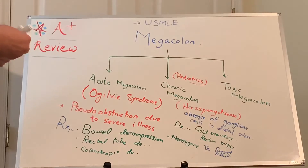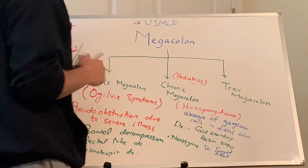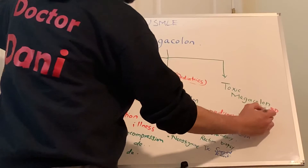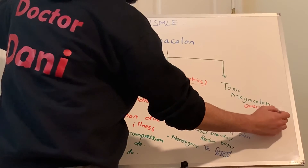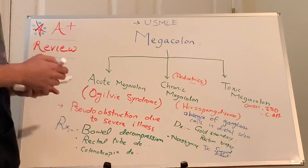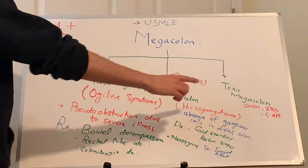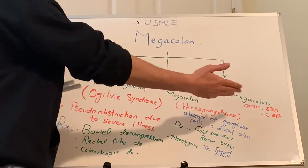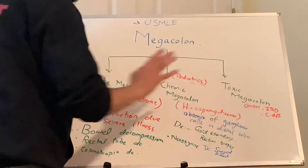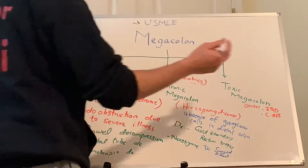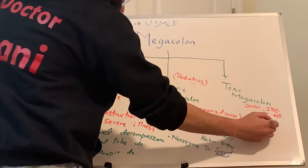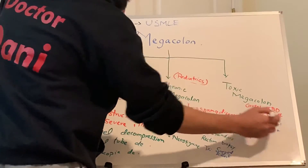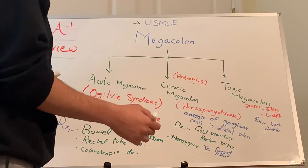Now toxic megacolon — we already know the main causes. Think about two conditions: one is IBD, the other is C. diff. This is non-obstructive colitis, as compared to pseudo-obstruction. Treat the main cause: for IBD, treatment is corticosteroids; for C. diff, treatment is antibiotics.